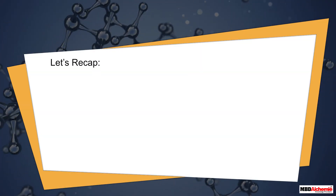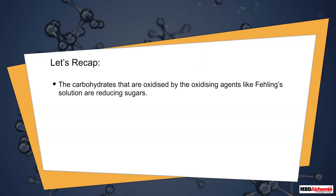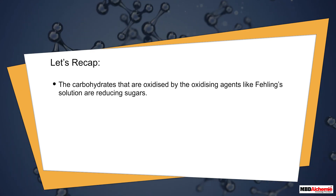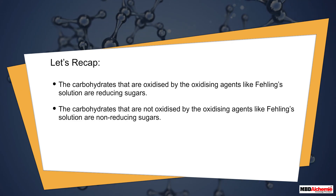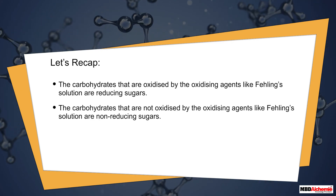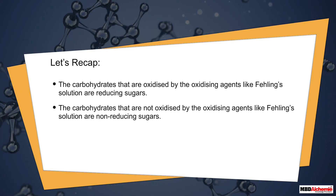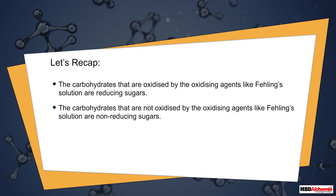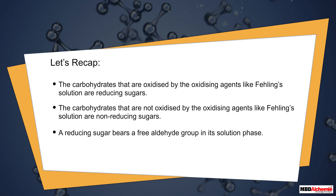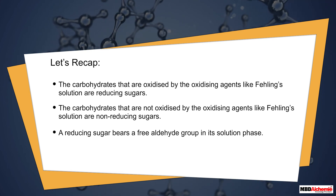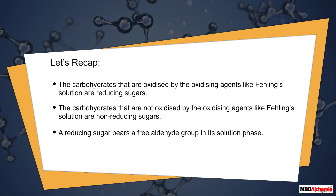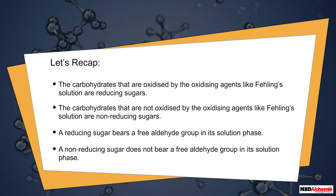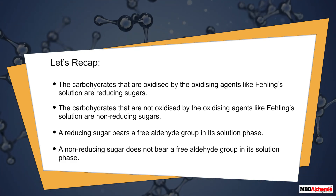Let's recap. The carbohydrates that are oxidized by oxidizing agents like Fehling's solution are reducing sugars. The carbohydrates that are not oxidized by oxidizing agents like Fehling's solution are non-reducing sugars. A reducing sugar bears a free aldehyde group in its solution phase, while a non-reducing sugar does not bear a free aldehyde group in its solution phase.